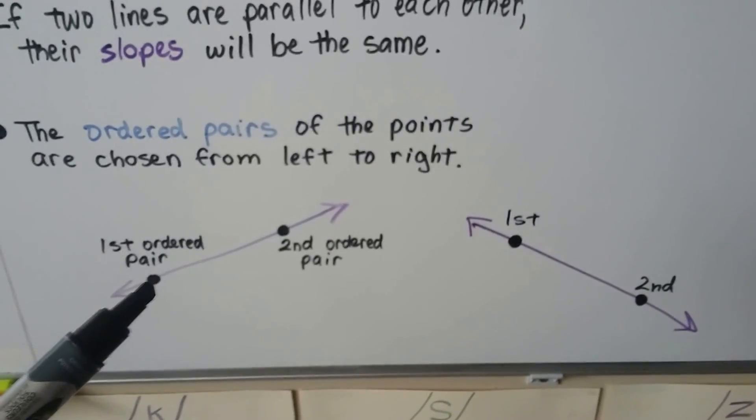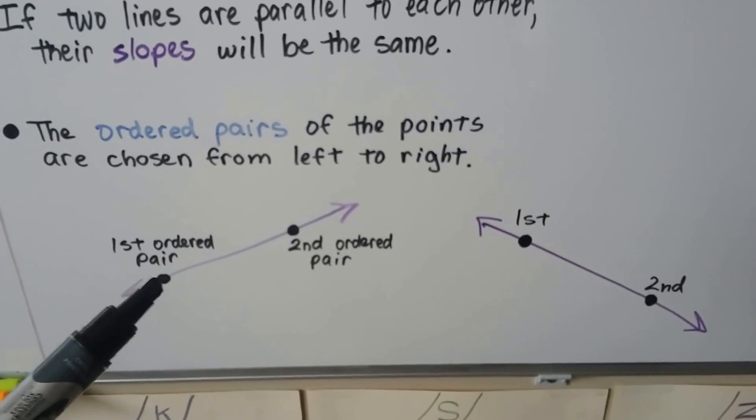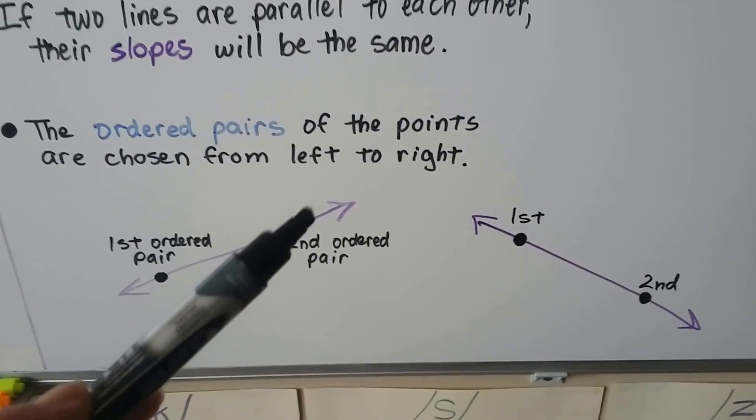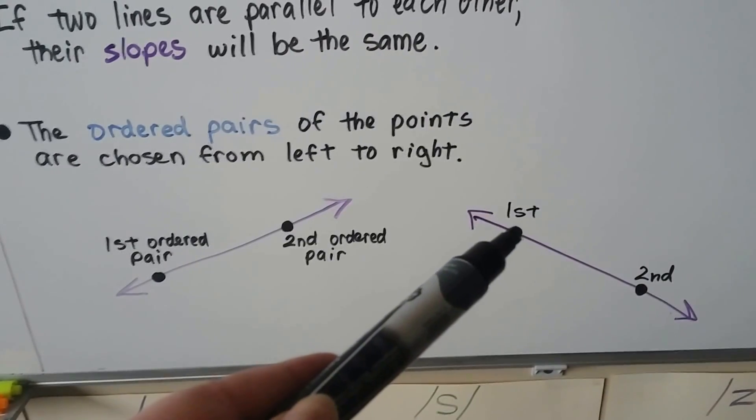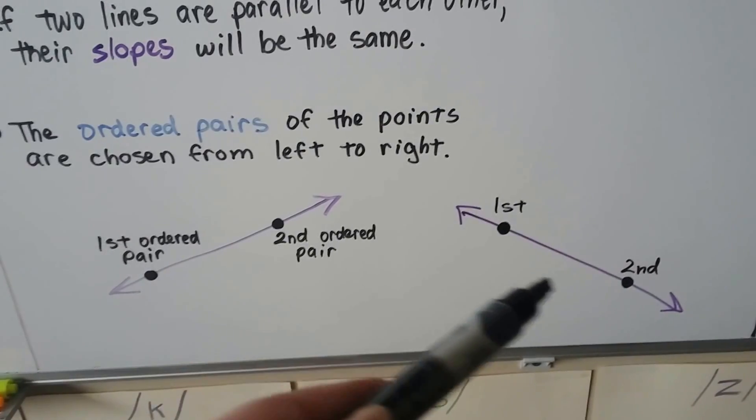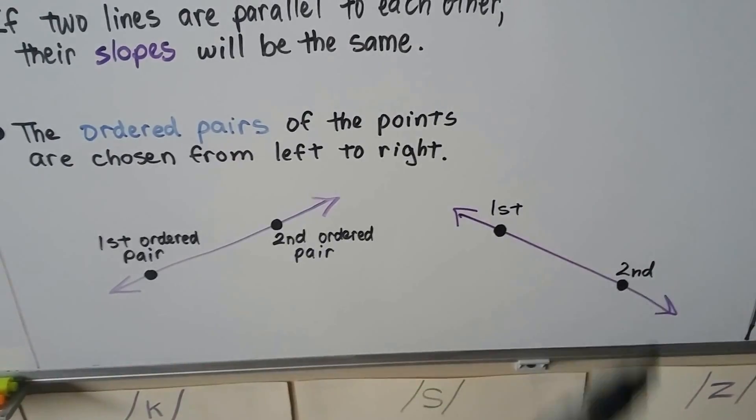And you know that this is a positive slope because to get from the first one to the second one, you have to go up. See? So that would be a plus. And for this one to go from the first point to the second point, you'd have to fall and go down. So it'd be minus numbers.